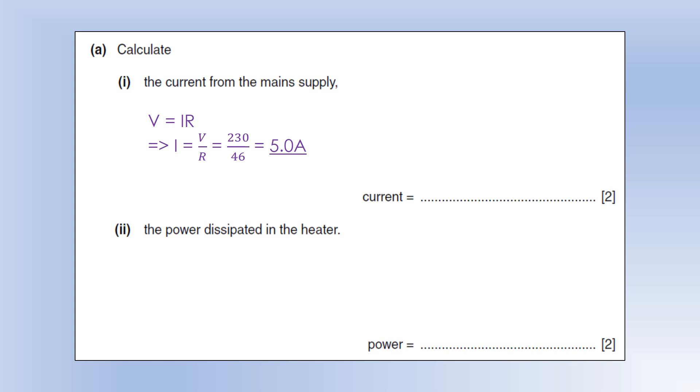Now if you want the power, there are two ways of doing that. The first way would be using P equals IV. We know the current through R1 and we know the potential difference across R1, so we can get the power.